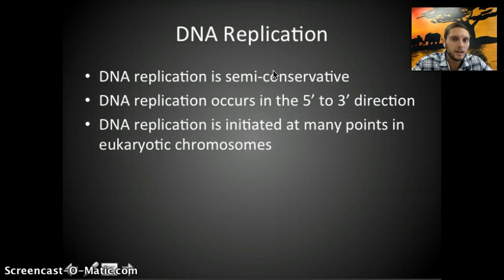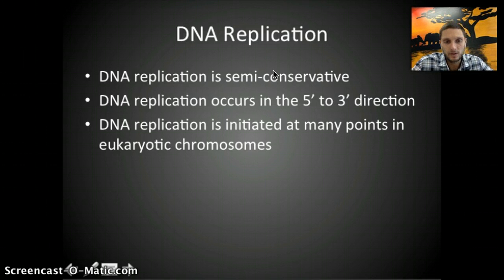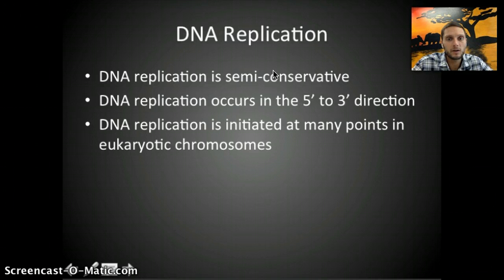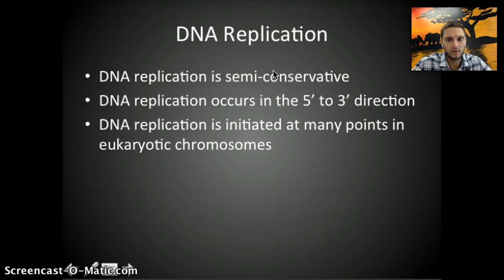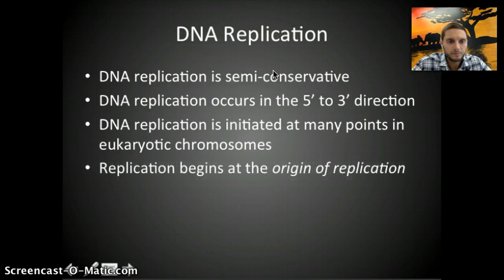Replication is initiated at many points in eukaryotic chromosomes. In prokaryotes, the DNA is essentially a circular loop, so it is only initiated at one spot. In eukaryotes, DNA replication can be started at many different points, which helps to speed up the process. We say that replication begins at the origin of replication.